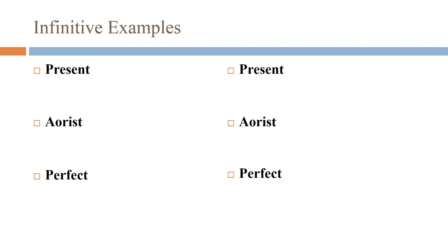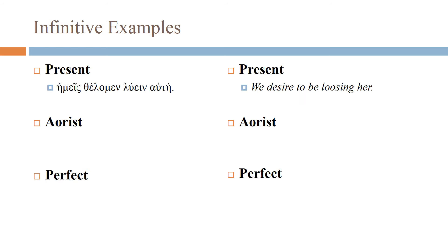Let's look at some infinitive examples. Present infinitive: hēmeis thelomen luein autēn — that -ain ending is the present infinitive ending. Its meaning is 'we desire to be loosing her.' The infinitive can take an object, so 'loosing her.' Because this is present, its aspect is continuous — that's why I'm using 'to be loosing.'